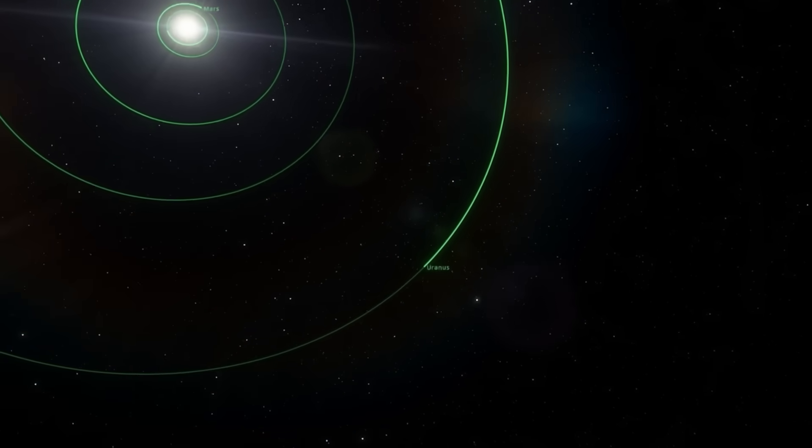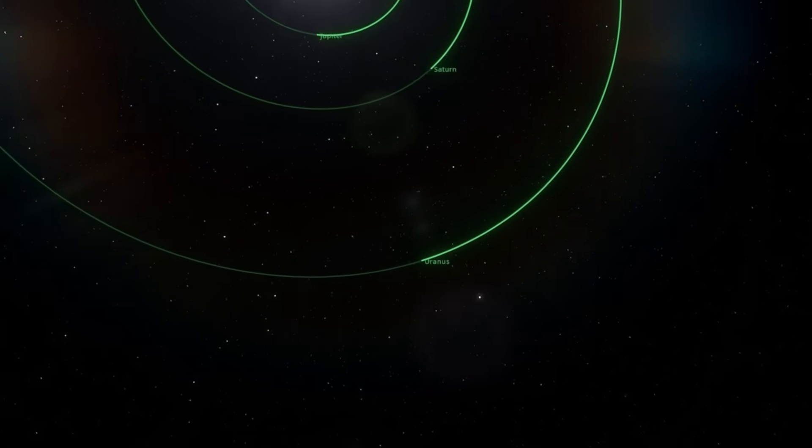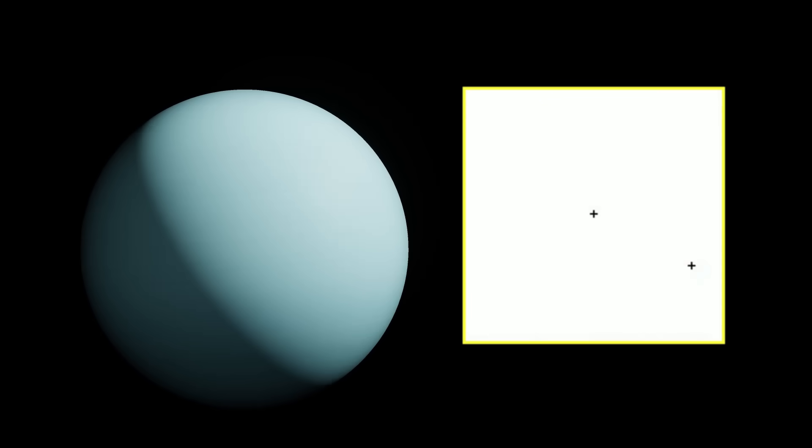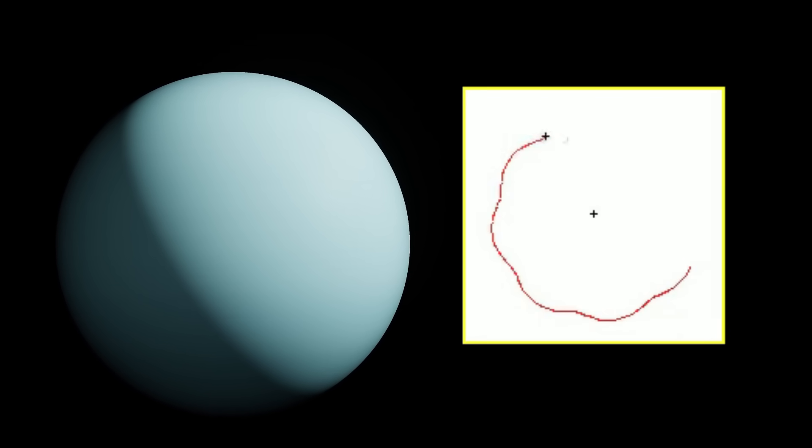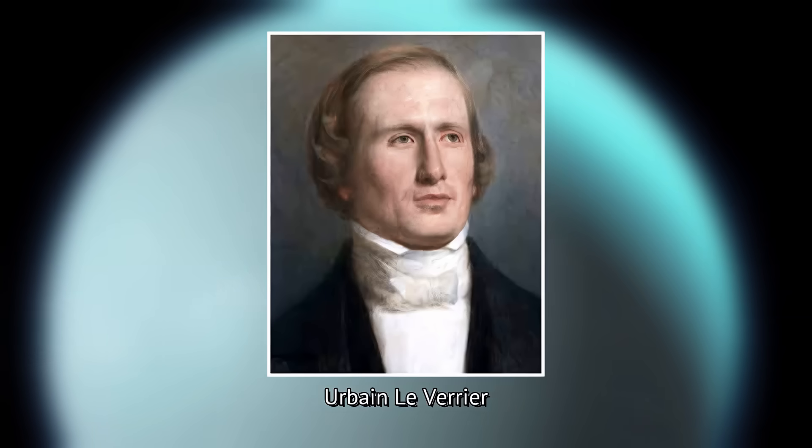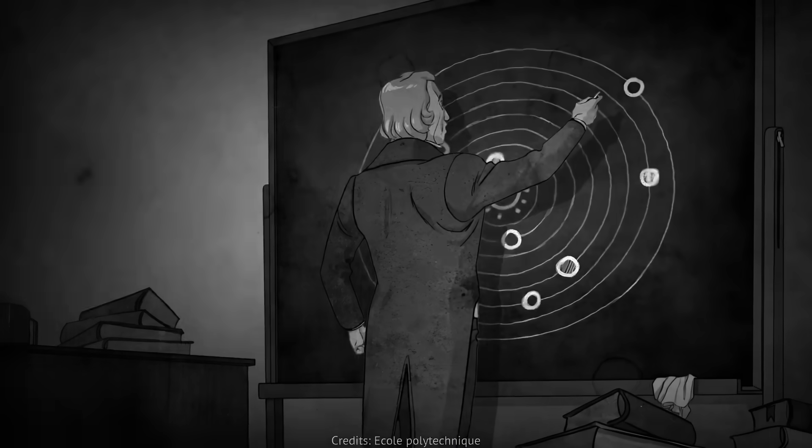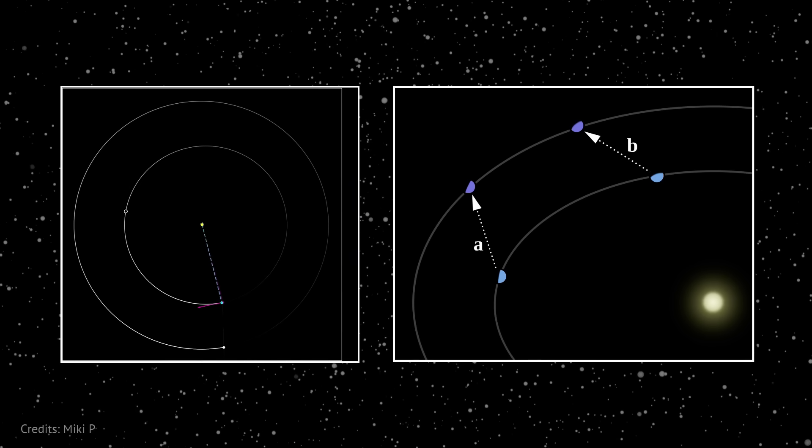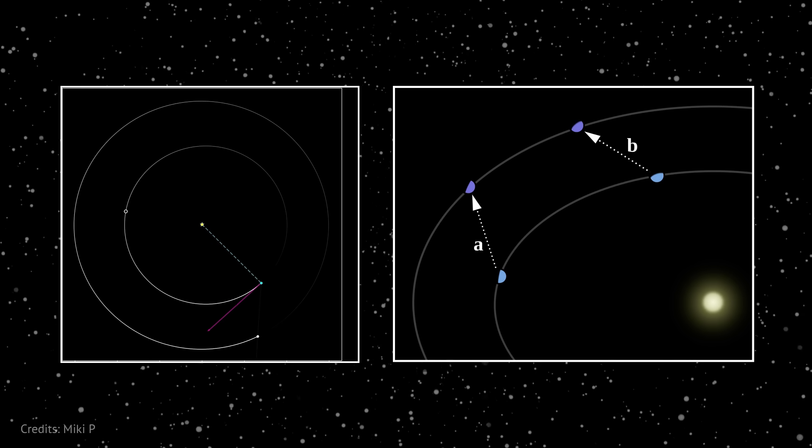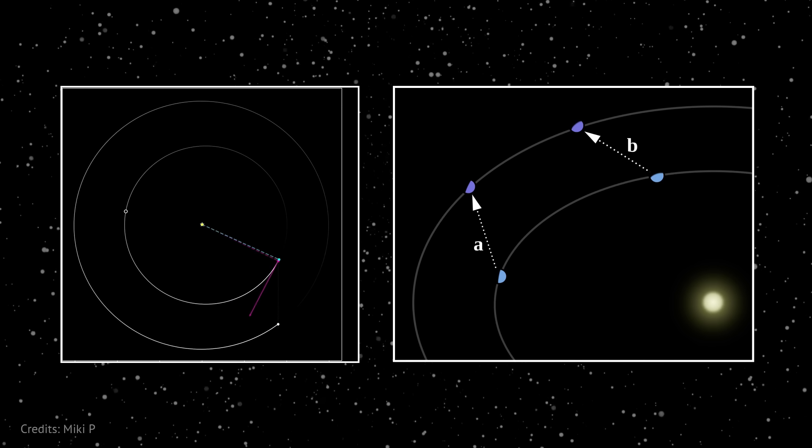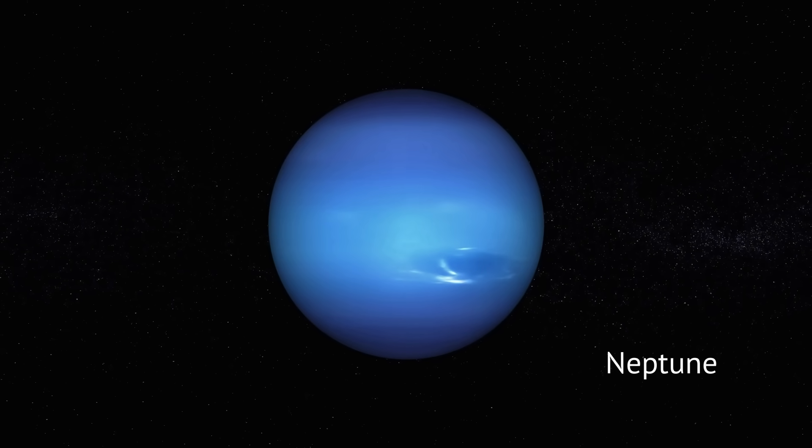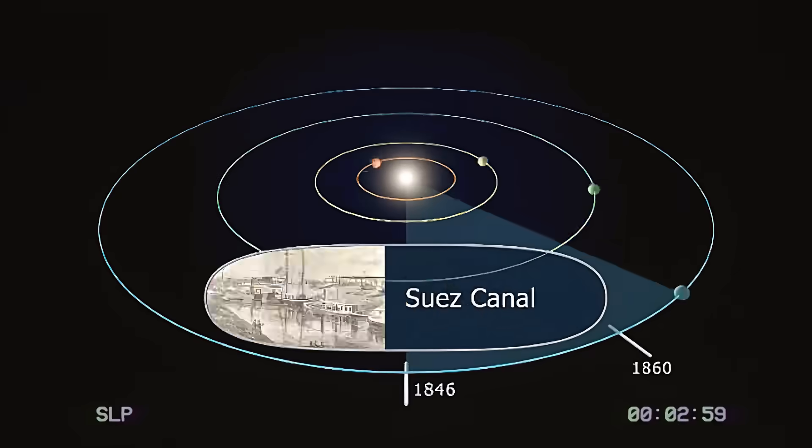But with more observations, astronomers realized Uranus didn't move the way Newton's laws said it should. Its orbit wobbled, just slightly, but enough to raise eyebrows. A French mathematician named Urbain Le Verrier worked it out with pencil and paper and concluded that maybe there was another planet pulling on Uranus. He even calculated where this mystery planet had to be, based entirely on Uranus's strange behavior. And when astronomers pointed their telescopes at that spot in the sky, lo and behold, they found Neptune, right where the math said it would be.